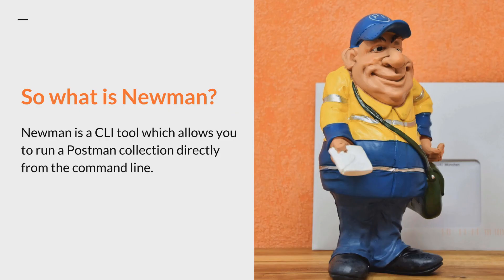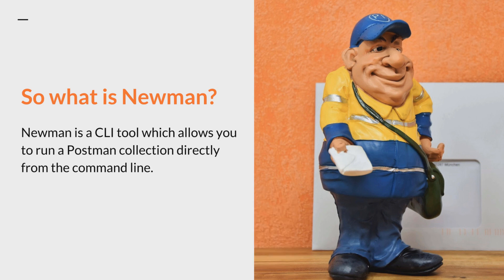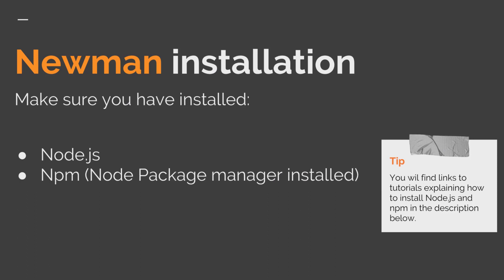We've talked a lot about Newman, but what is Newman anyway? To put it simply, Newman is a CLI tool that allows you to run a Postman collection directly from the command line, directly from the terminal. For your own machine this isn't a particular advantage, but think in terms of CI and automation — you cannot automate Postman as a tool itself because it always needs manual interaction. For systems like Jenkins, we need this tool in between that can understand the Postman collection, run the tests inside it, and report whether everything is working as expected. This is the gap that Newman fills in.